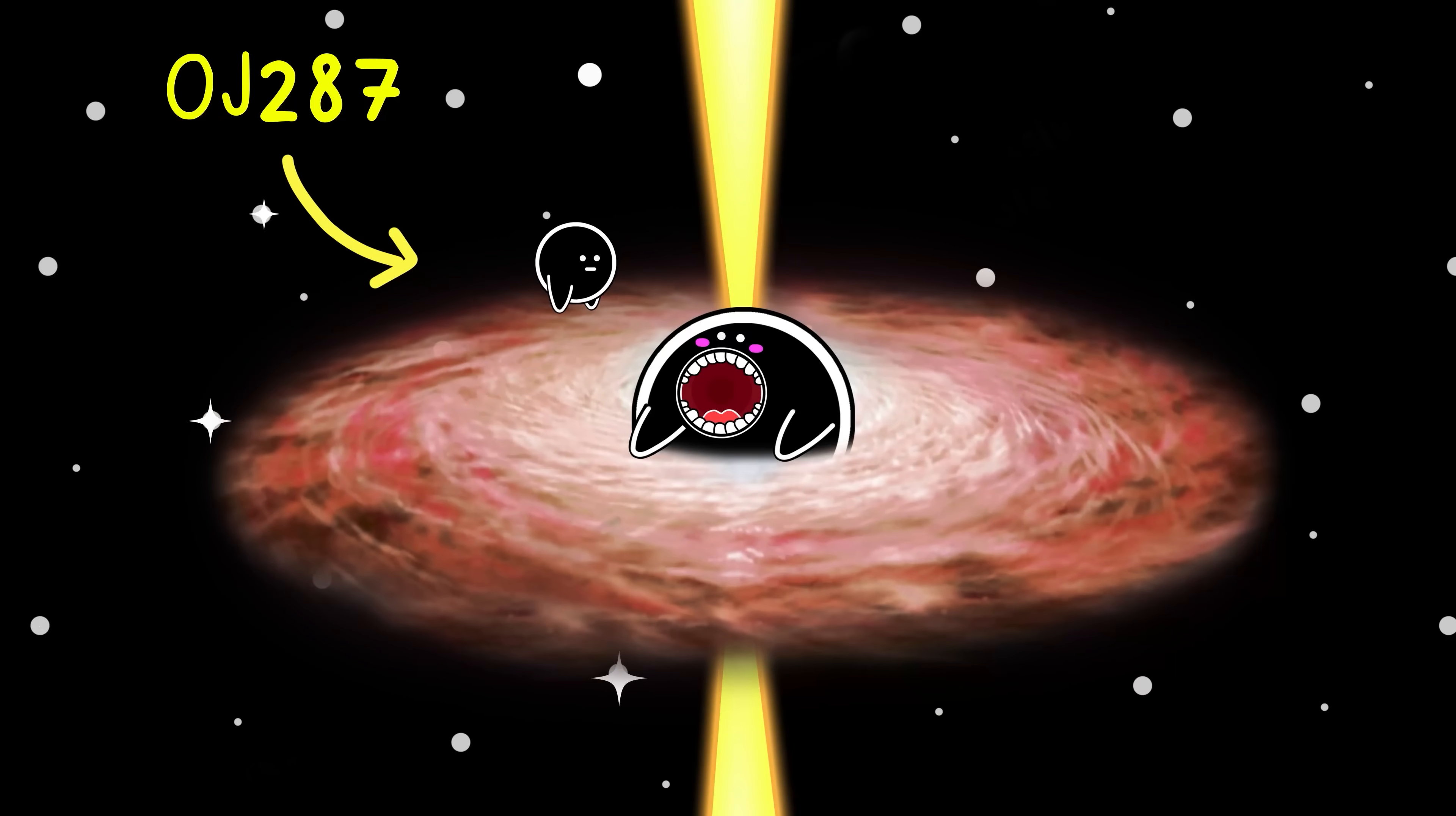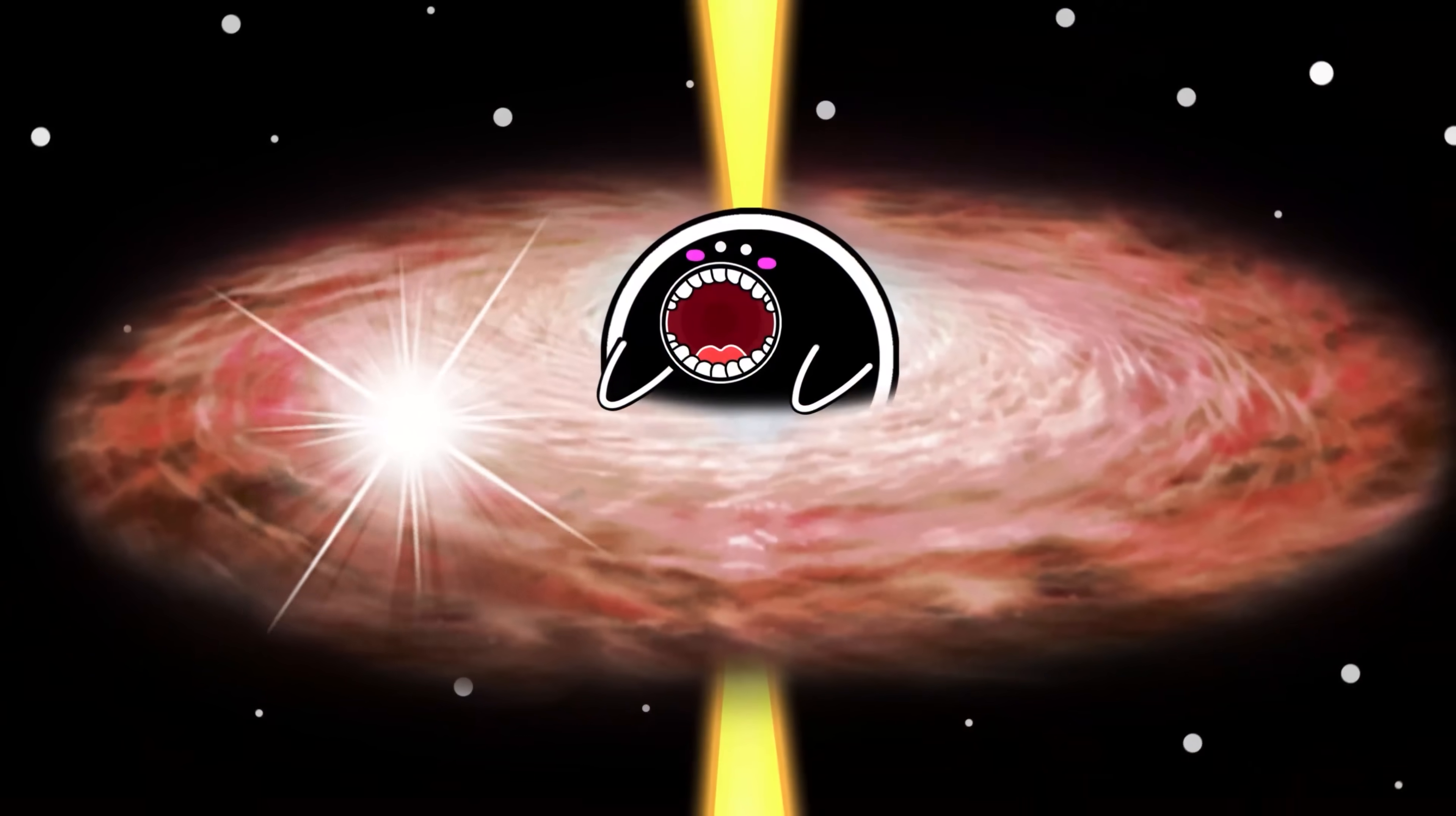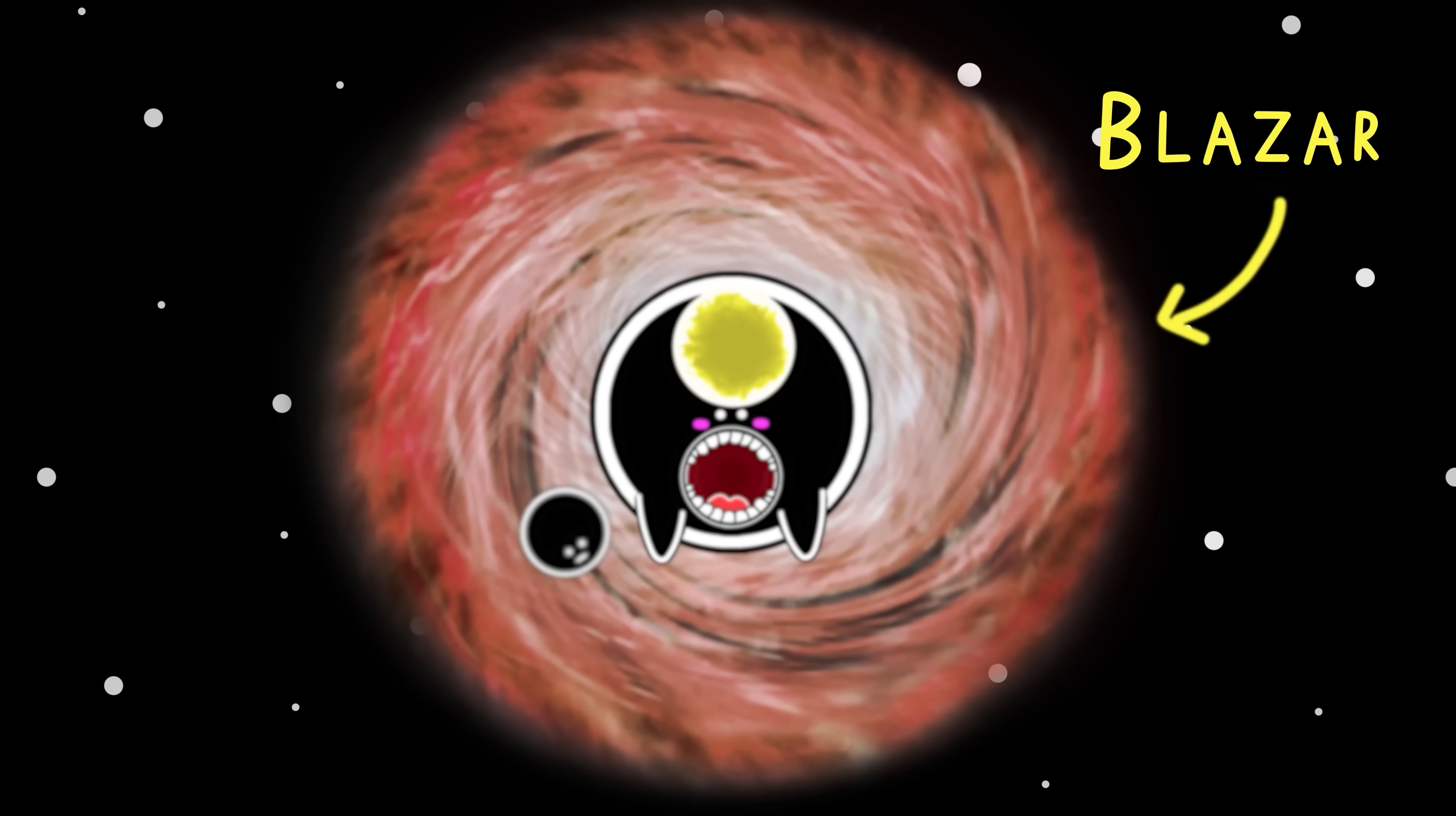OJ-287 is a different kind of beast. It's a binary supermassive black hole system. The smaller one of 150 solar masses punches through an 18 billion solar mass black hole quasar accretion disk every 12 years. Like clockwork and boom, the whole galaxy flies up brighter than a trillion suns. We've even studied this from Earth for 130 years. How? Because this extreme object is also known as a blazar.